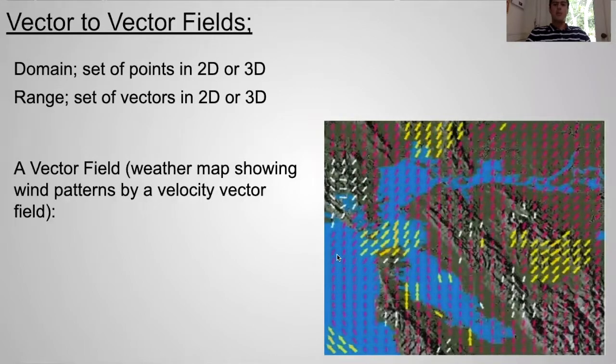Here's an example of a vector field that shows a weather map and the wind distribution by a velocity field. On the map, at every point, there is a vector with varying length and direction which represent the wind patterns.